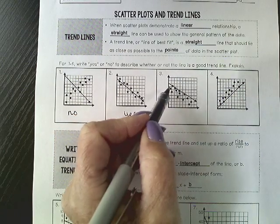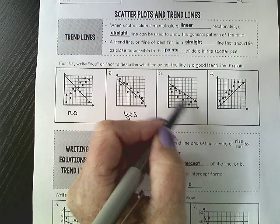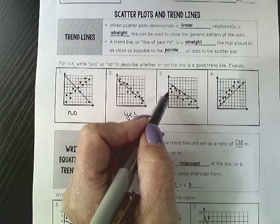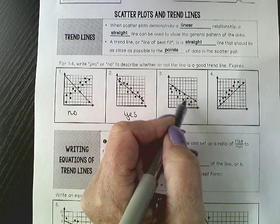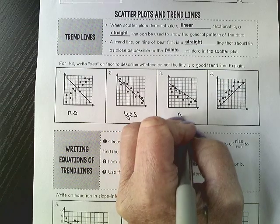Now what about the next one? The line, and then all the points below it. That is not a line of best fit because it does not truly go through the data points. So that would be a no.